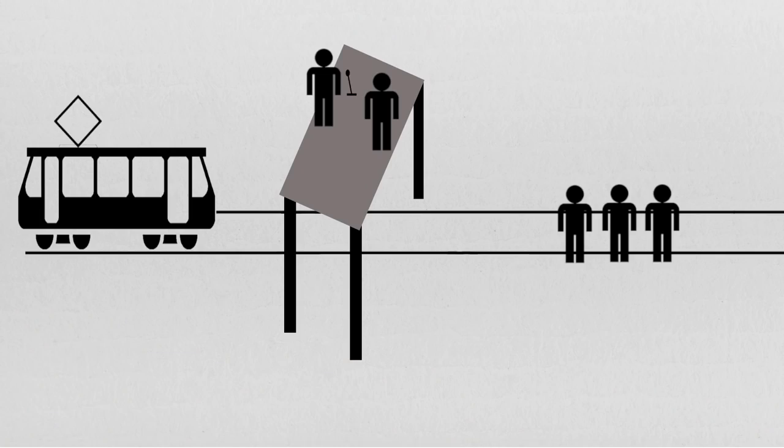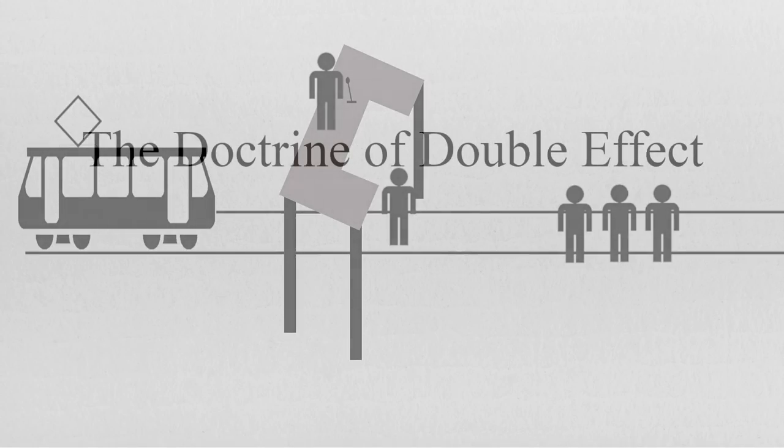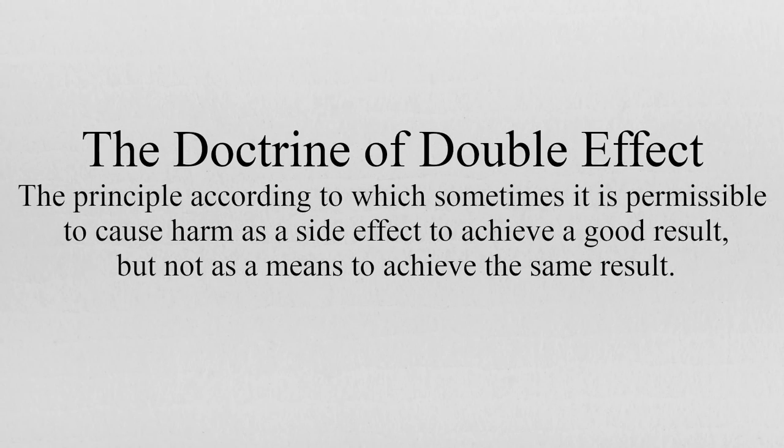Aside from the rationale just provided, there is also another reason why pulling the switch would likely get one charged with murder. And that is that by pulling the switch one is causing harm as a means to a good deed, rather than causing harm as a side effect to a good deed, as was the case in the standard trolley problem. This distinction is spelled out by the doctrine of double effect, that is a moral principle according to which there is a difference in causing harm as a means to an end, rather than as an unintended consequence of one's actions.